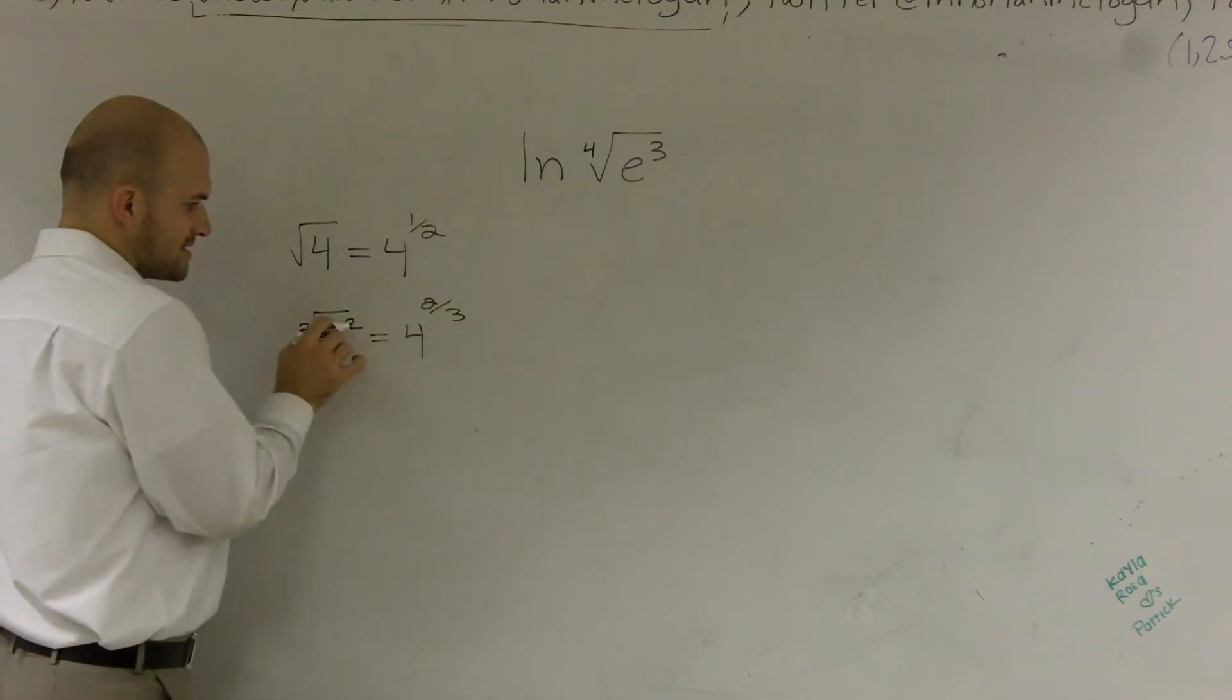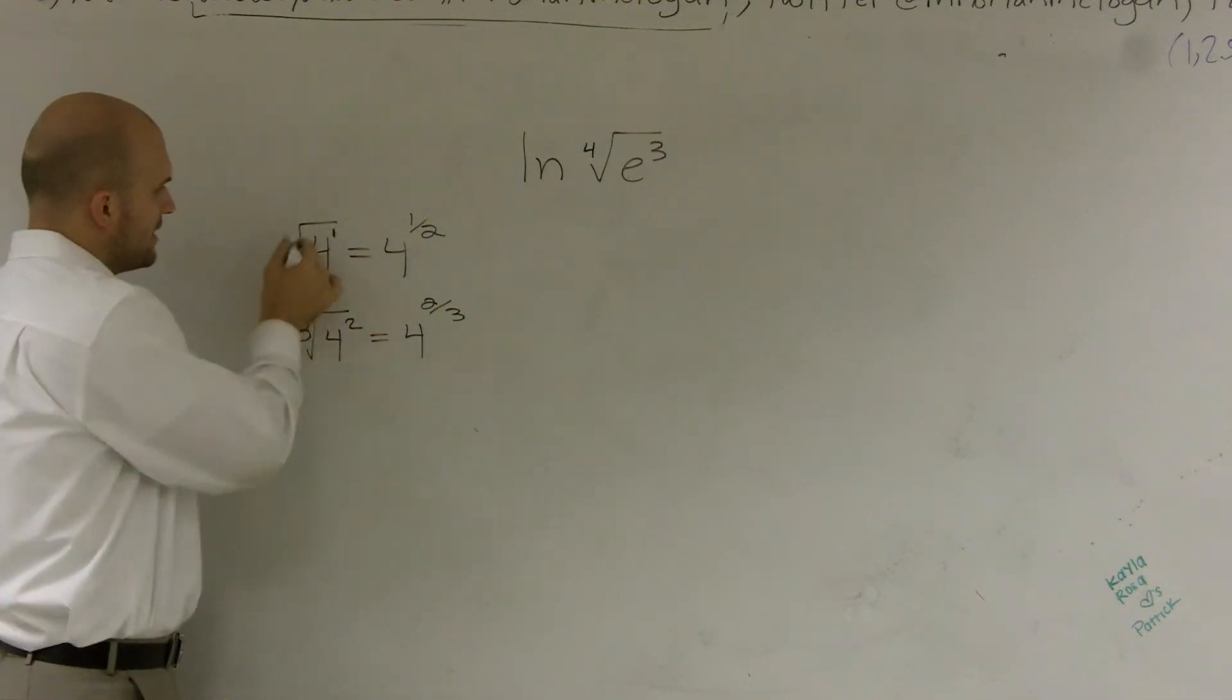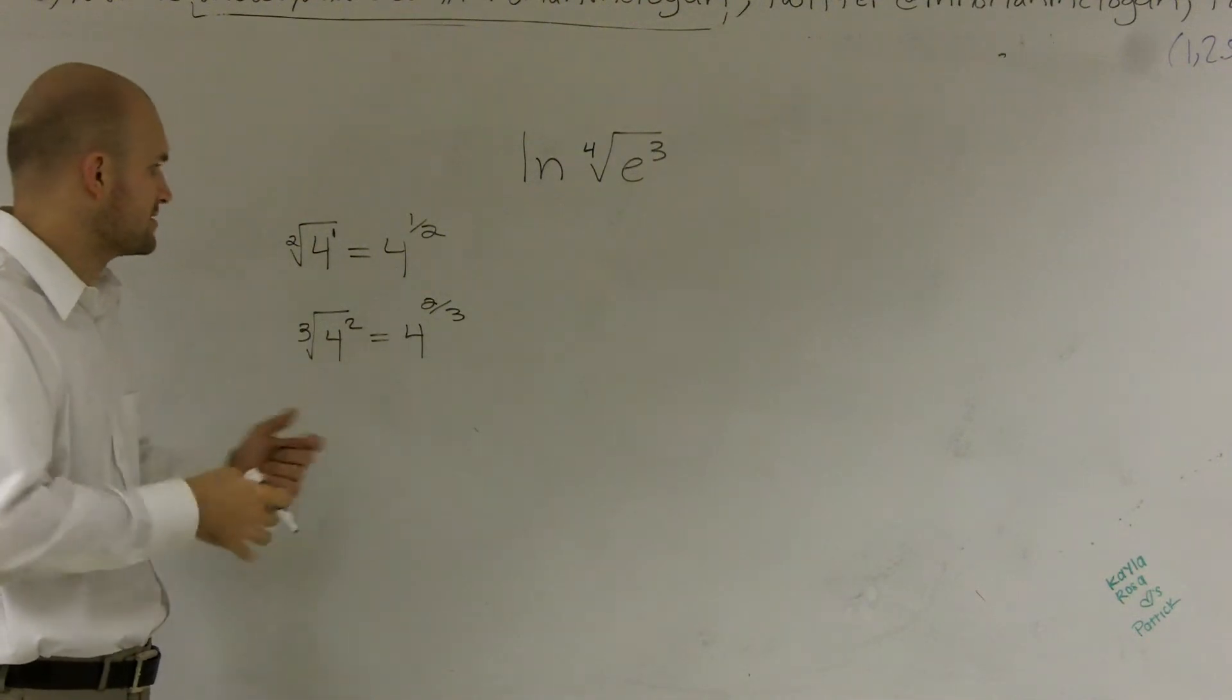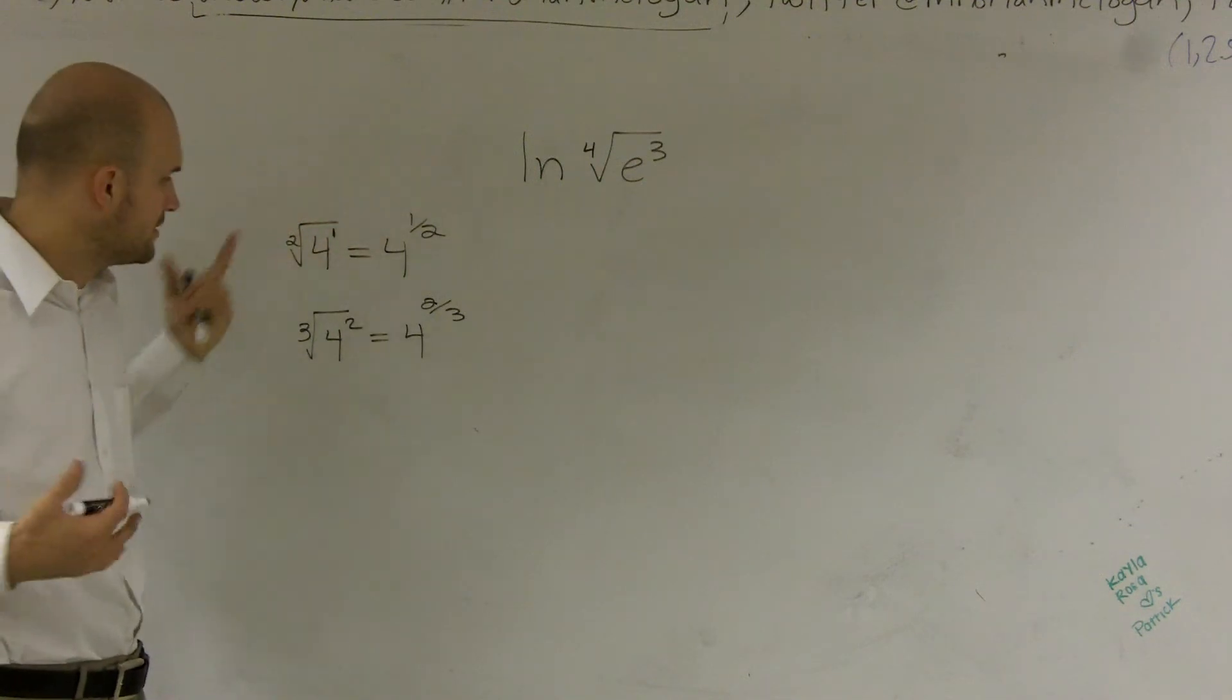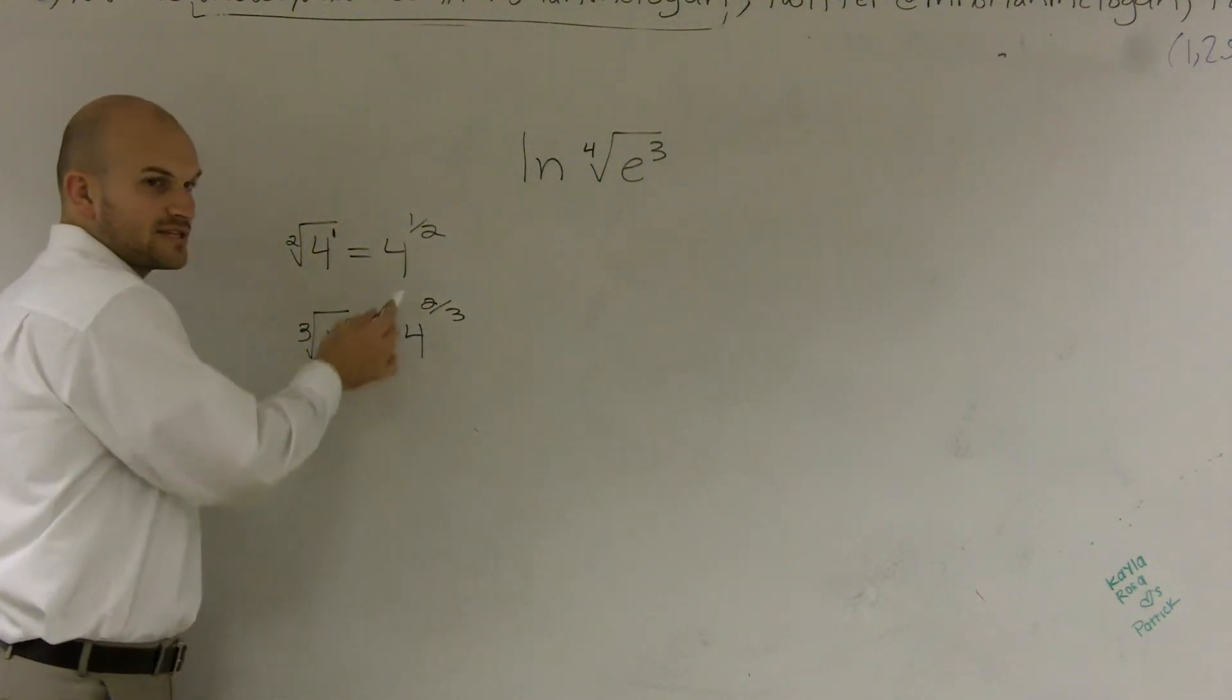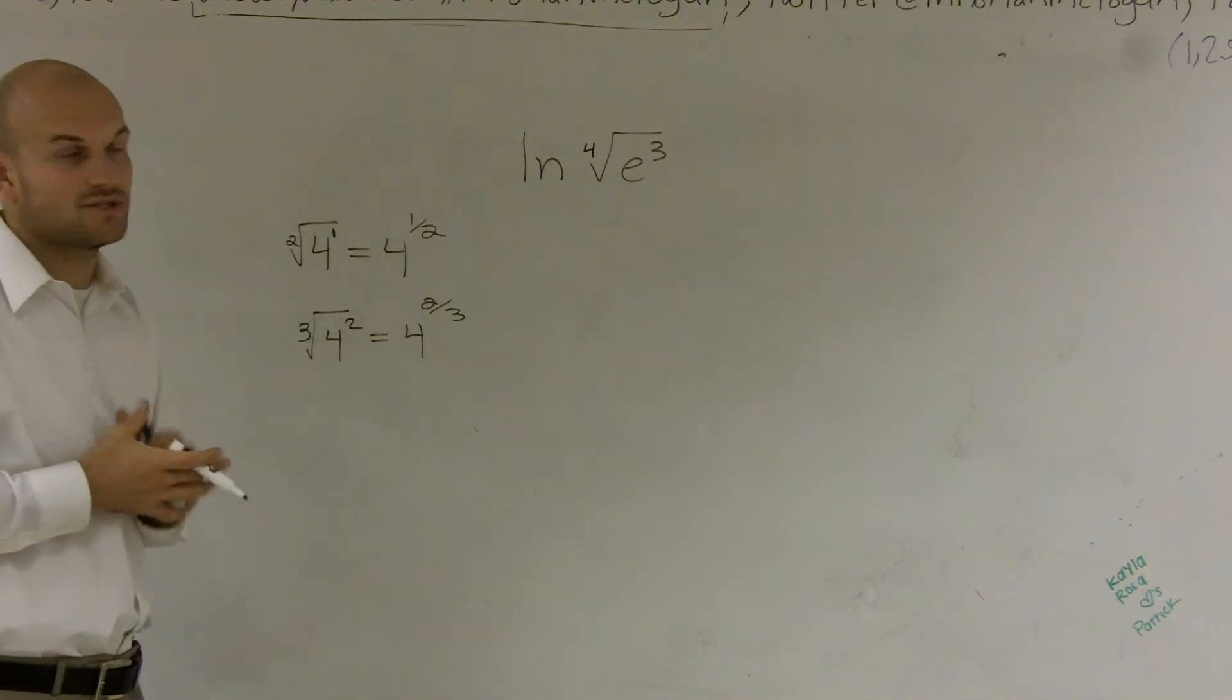We don't always write a power of 1, or put a 2 for a square root because it's so common for us. But that's how you can change a radical to an exponent. If you don't believe me, type in your calculator: cube root of 4 squared is the same thing as 4 to the 2/3 power. Same thing as the square root of 4 is 4 to the 1/2.